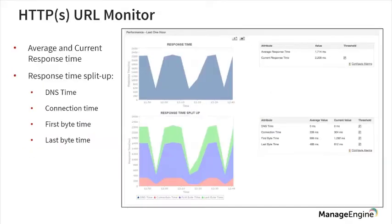The URL monitor not only helps you monitor the availability of a particular URL, it also presents the response time split up. This response time split up can be analyzed to find out whether there is an error on the host server side, or if the error is with the network, or if there is an increased processing time on the server side. Based on the inputs from the URL monitor, you can make sure that the URL of your website is always delivering a smooth experience.